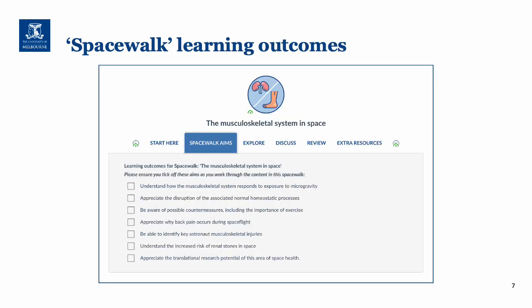The learning outcomes are to understand how the musculoskeletal system responds to microgravity, disruption of the associated normal homeostatic processes, possible countermeasures including the importance of exercise, understand why back pain occurs during space flight, be able to identify key astronaut musculoskeletal injuries, understand the increased risk of renal stones, and appreciate the translational research potential of this area of space health.